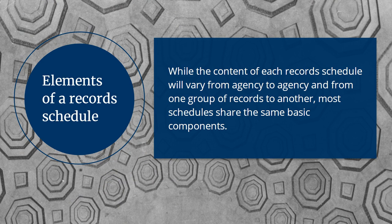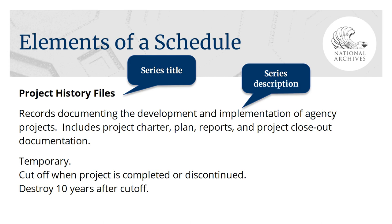While the content of each record schedule varies from agency to agency and from one group of records to another, most schedules do have the same basic components. For each record series — each type of records — you will find a title and a description. The title usually reflects what the records are called in the agency, and the description helps you identify how the records are used and what types of material might be included. For example: Series title — Project history files. Series description — Records documenting the development and implementation of agency projects, including project charter, plan, reports, and project closeout documentation.